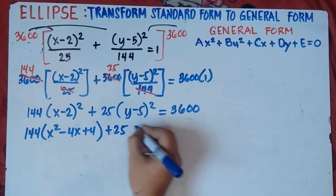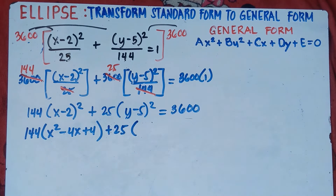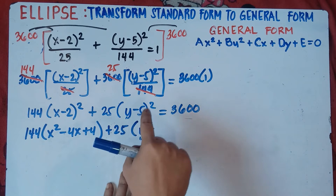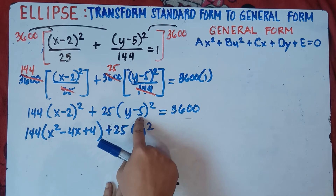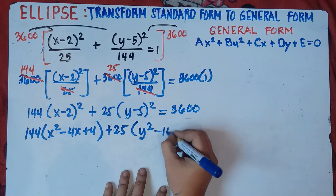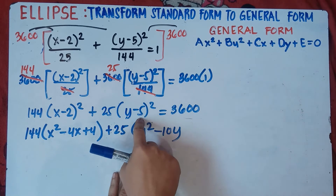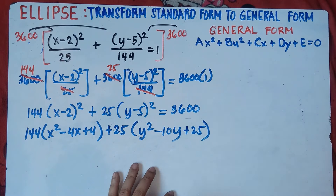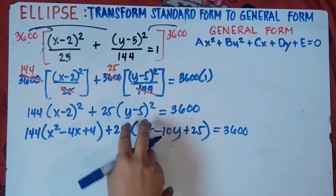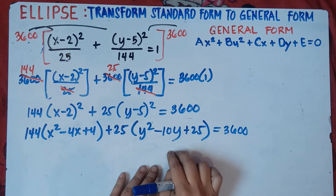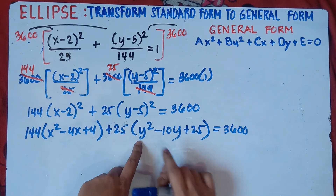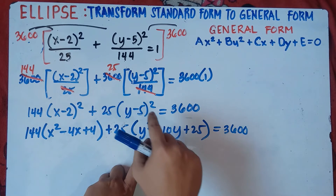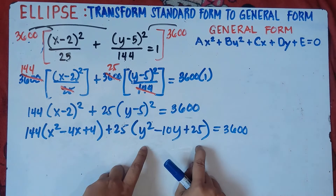Copy 25, then do the square of binomial for (y−5)². Square the first term: y times y = y². Multiply the first and second terms times 2: y times negative 5 is negative 5y, times 2 = negative 10y. Then square the second term: negative 5 times negative 5 = positive 25. So (y−5)² = y² − 10y + 25.